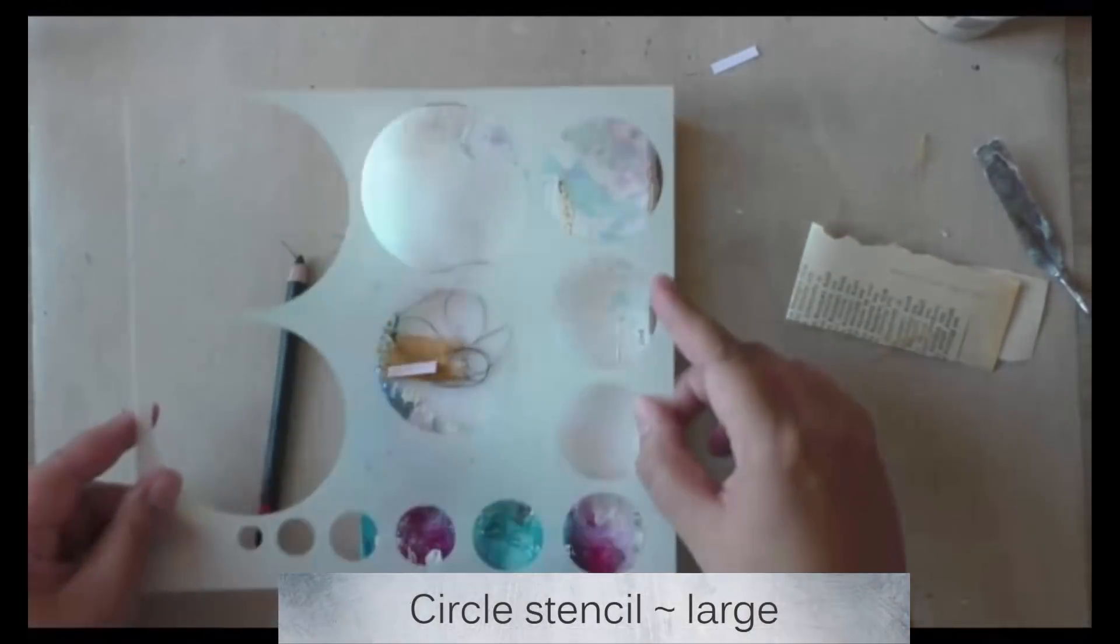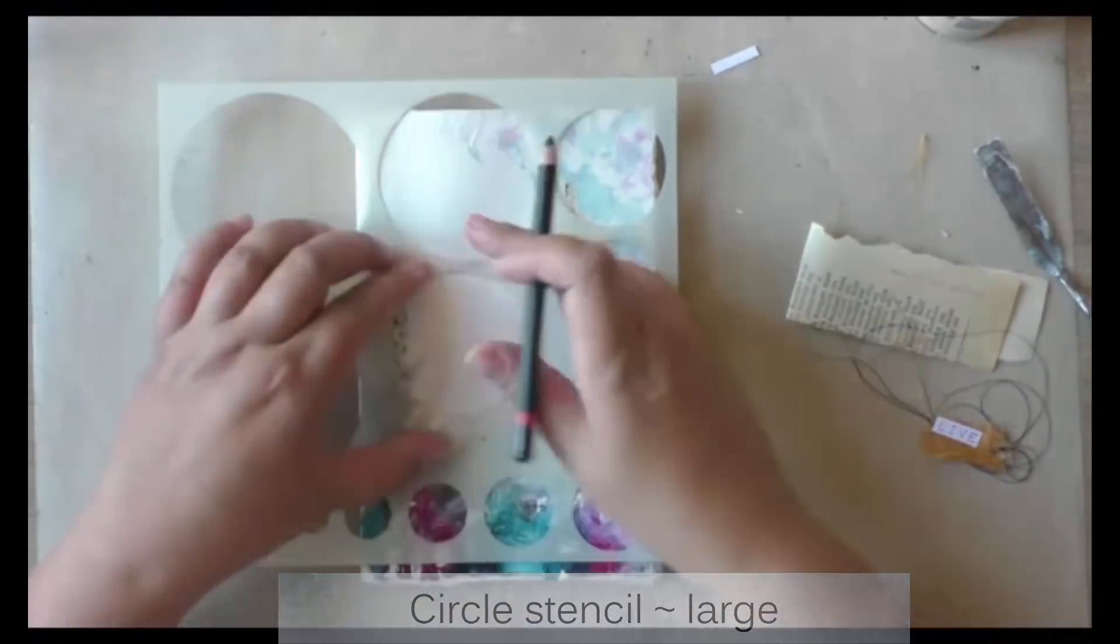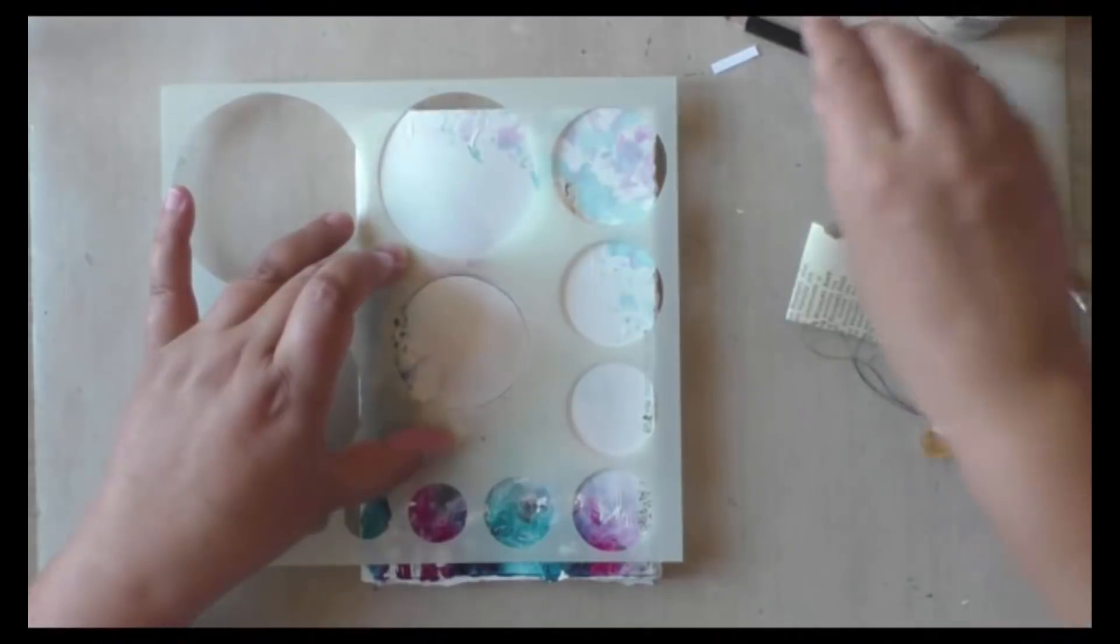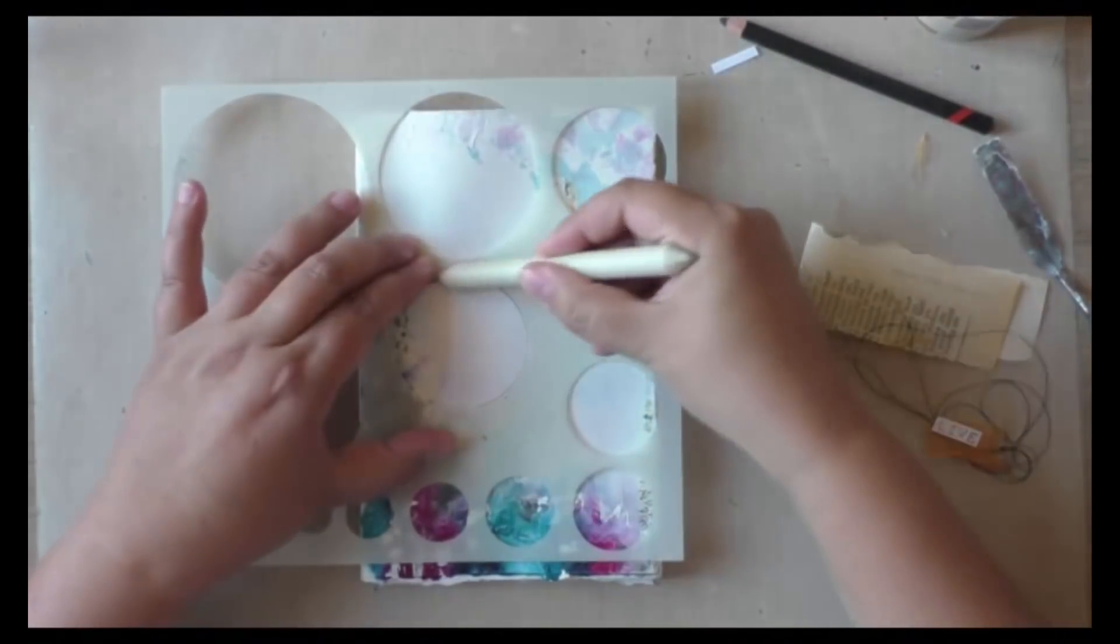As well as a charcoal pencil, very lightly, and then blending the charcoal using a blending stump. And I'm still using my stencil so that I'm really blending inside the circle and that it's not going all over the place.